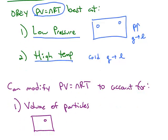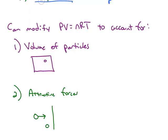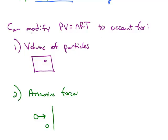However, PV equals nRT is not the only way to get calculations about gases. Another thing that can be done is to modify the variables in PV equals nRT.